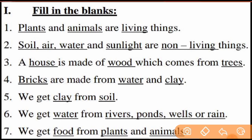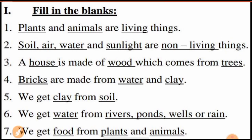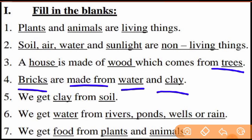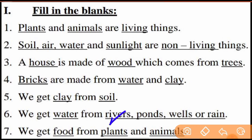Now a simple fill-in-the-blanks exercise. Plants and animals are living things. Soil, air, water, and sunlight are non-living things. A house is made of wood which comes from trees. Bricks are made from water and clay. We get clay from soil.